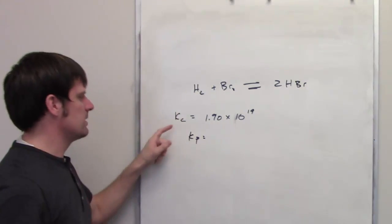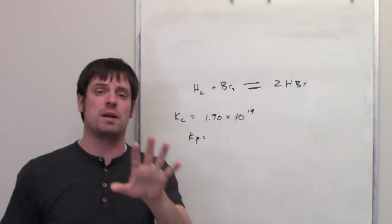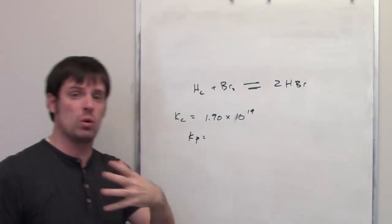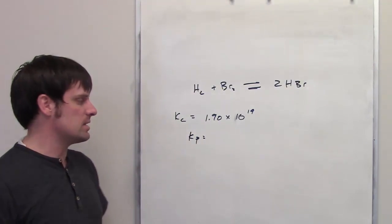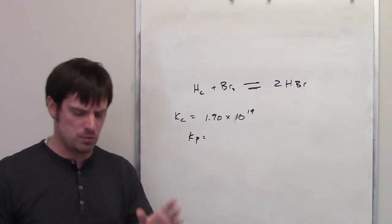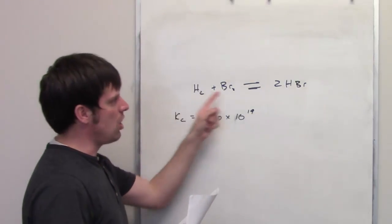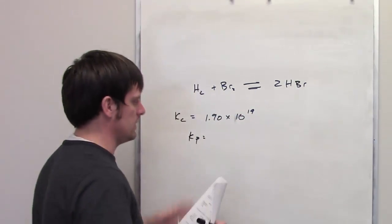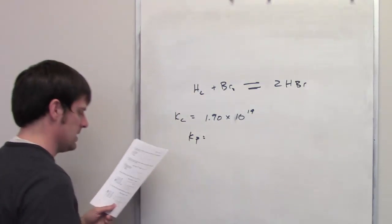Kc is the equilibrium constant with respect to concentration — molarity — and Kp is the equilibrium constant with respect to pressure. We can do that because all of these reactants and this product are gases. If they weren't gases, you couldn't do this.